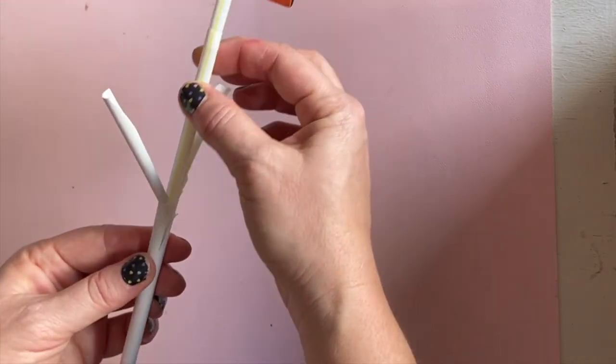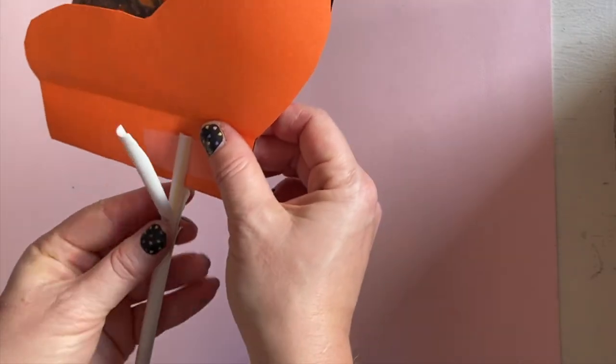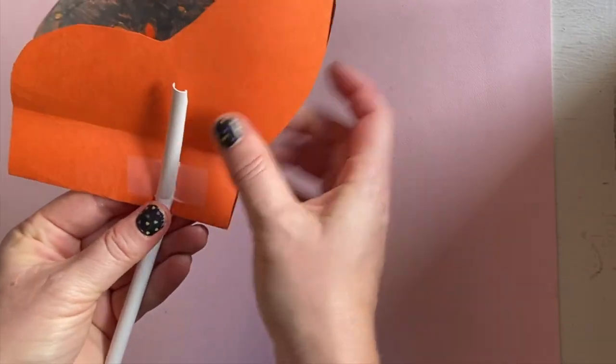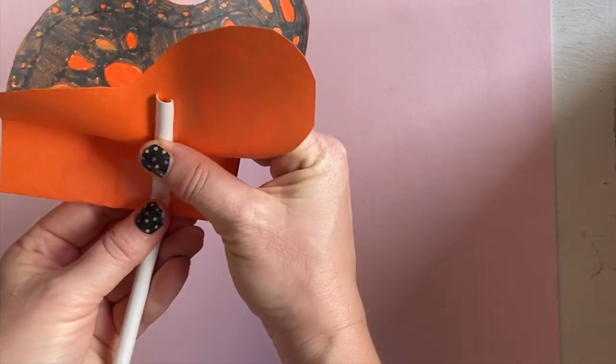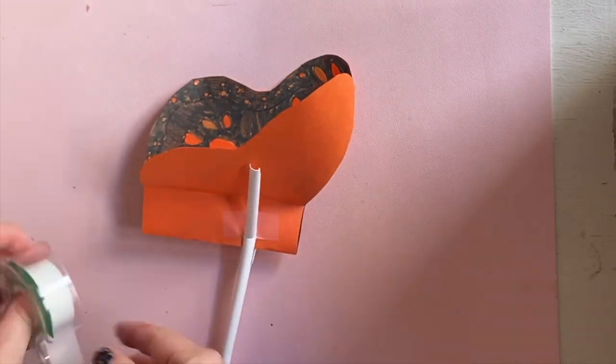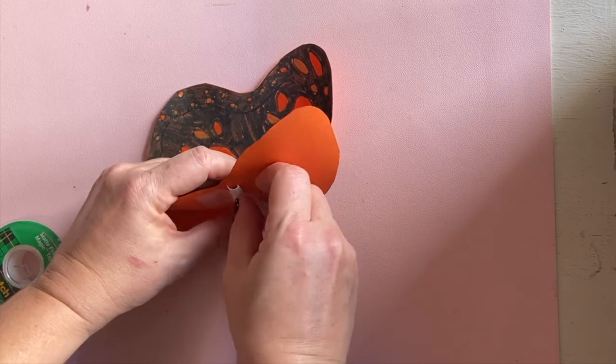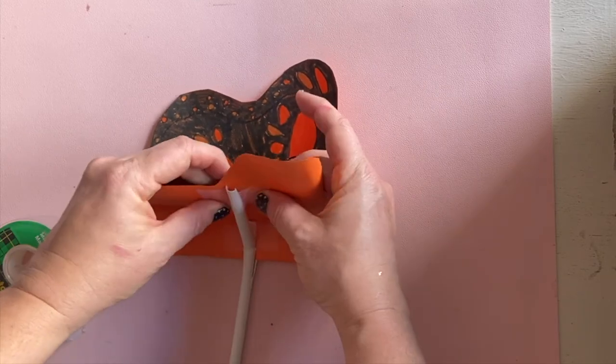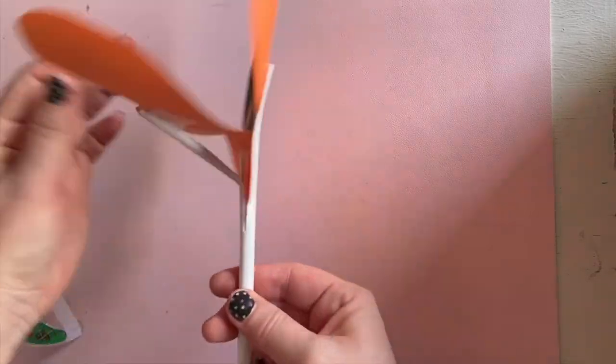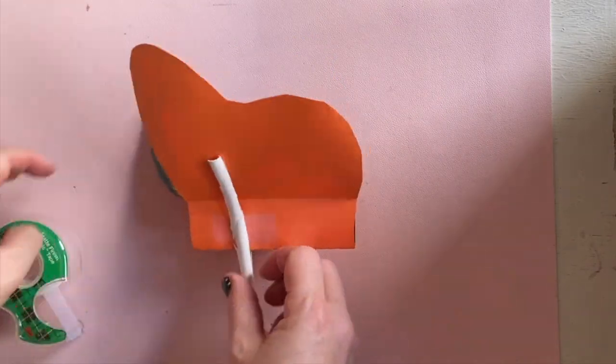Slide the smaller straw into the center of the larger straw. This time we'll secure the larger straw to the wings. Get your tape and secure it to the wing on one side. Then flip it over and secure it to the other side.